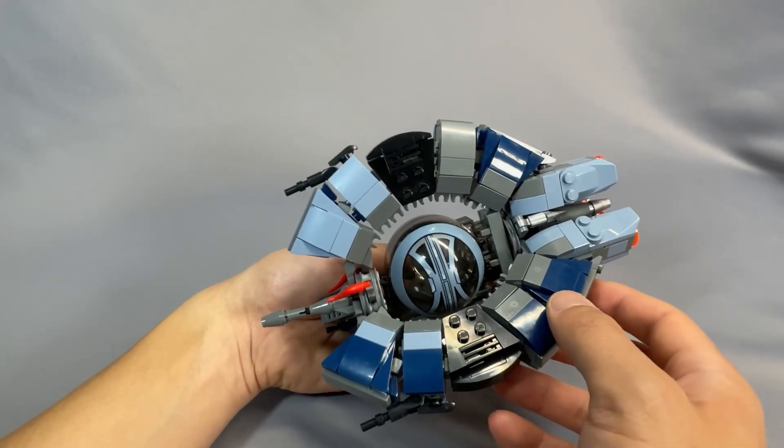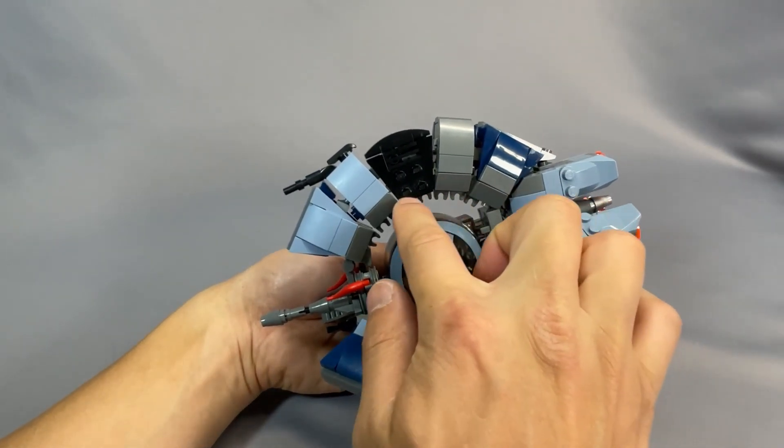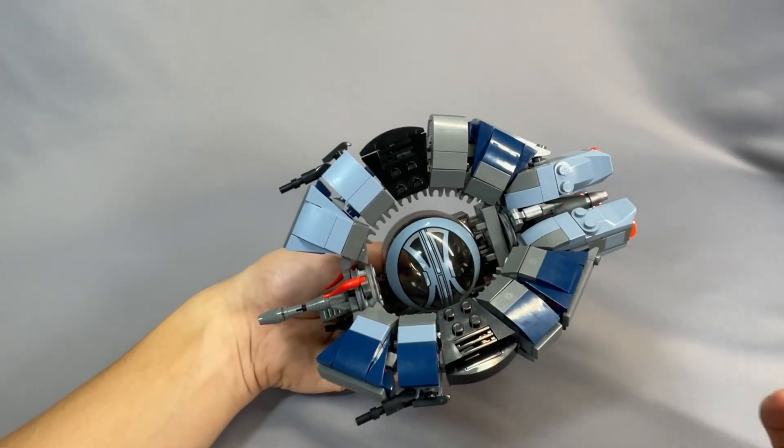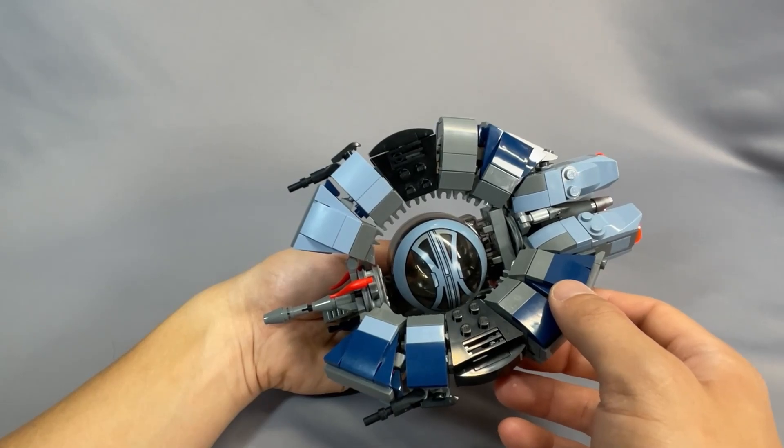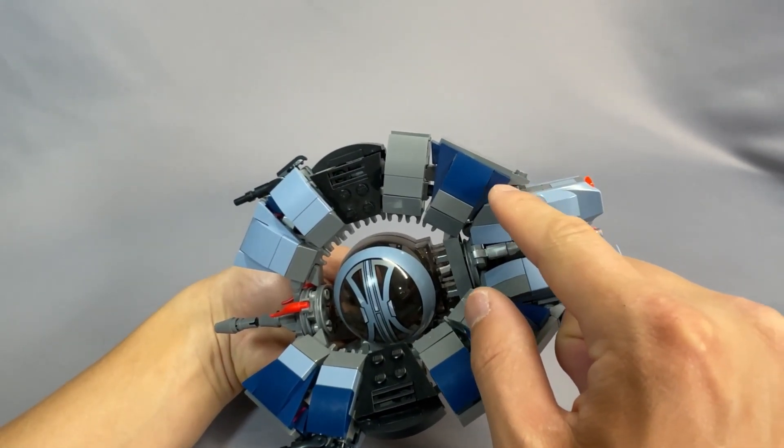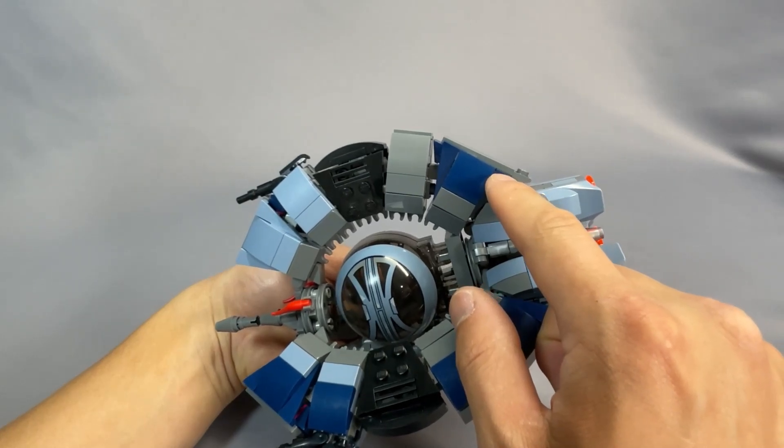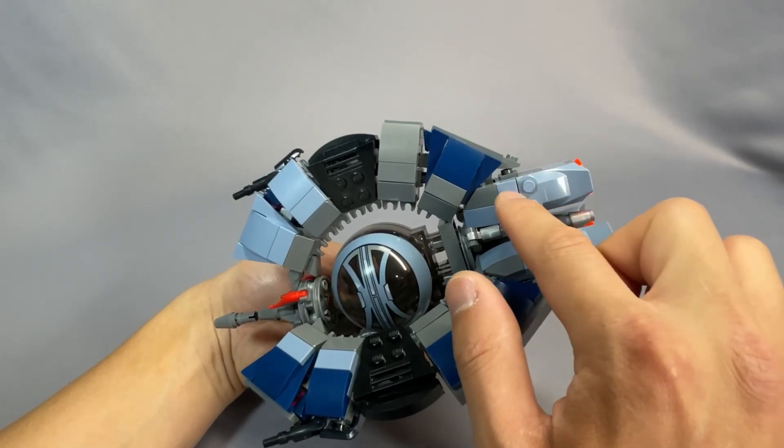This does a pretty good job representing the overall shape, and even these small ridge structures inside the curve here, represented with 1x1 tiles and clips, are canon accurate. I also like that this little section right here next to the engine has this inverted slope that you can see there to kind of approximate a smooth transition between the fin and the engine section.